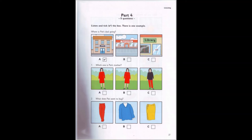2. What does Pat want to buy? Where are you going to go now, Pat? I'm going shopping. What do you want to buy? It's my birthday on Sunday, and I want something new to wear at my party. Do you want some new trousers? No, I'd like a skirt, because my mum gave me a beautiful blue sweater.